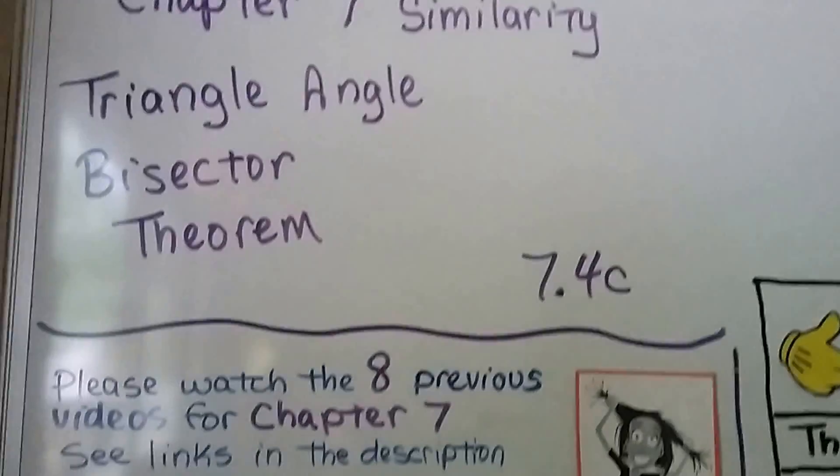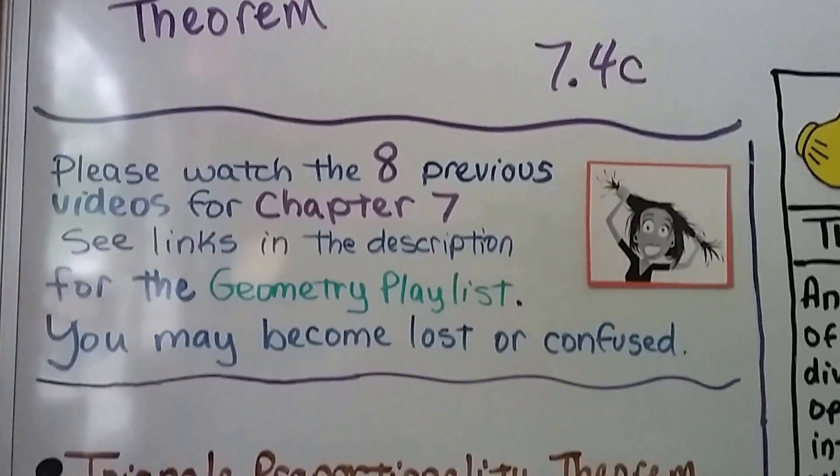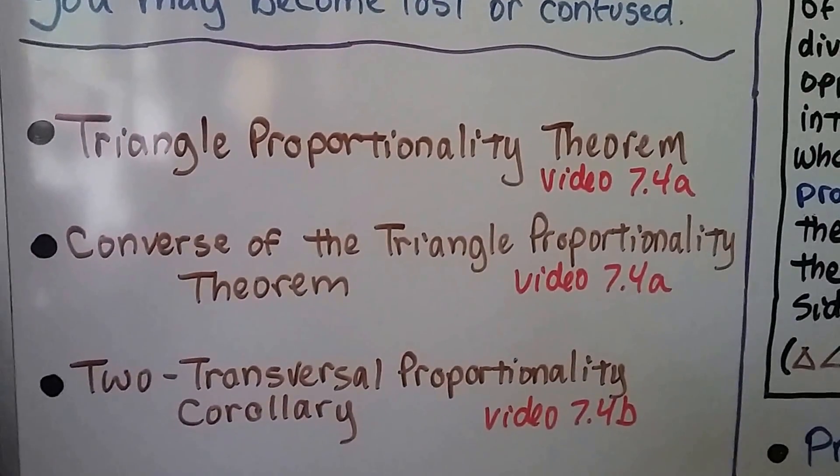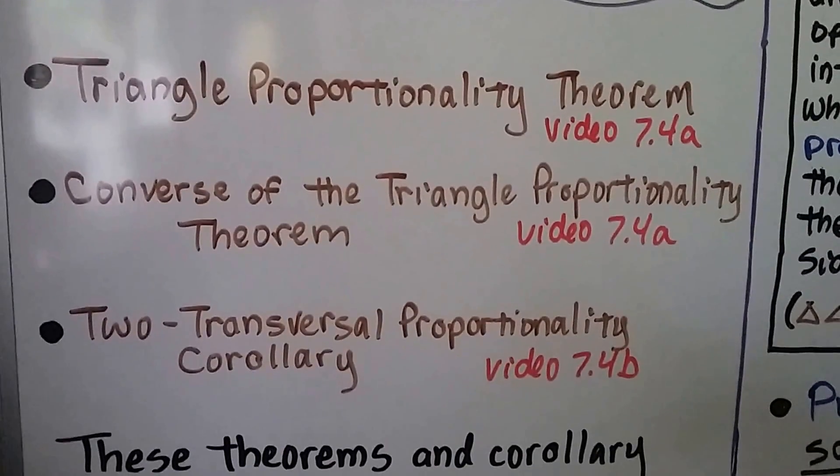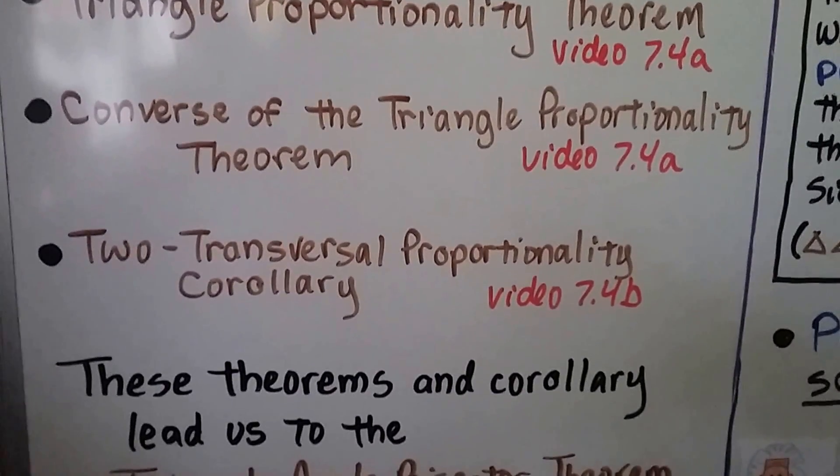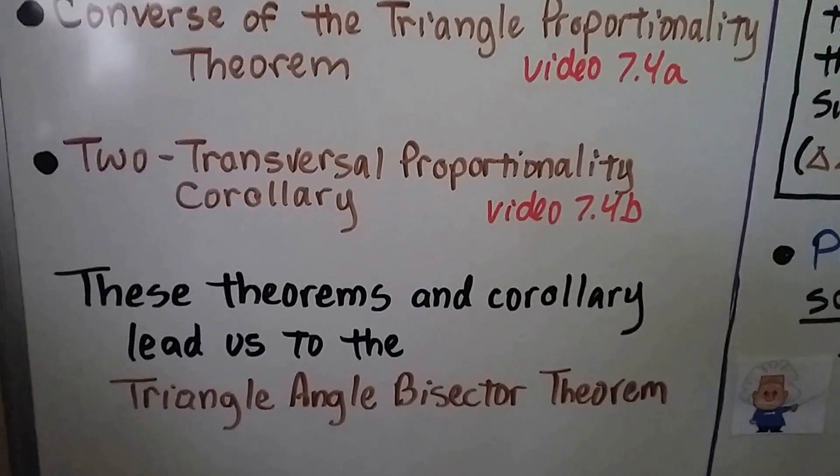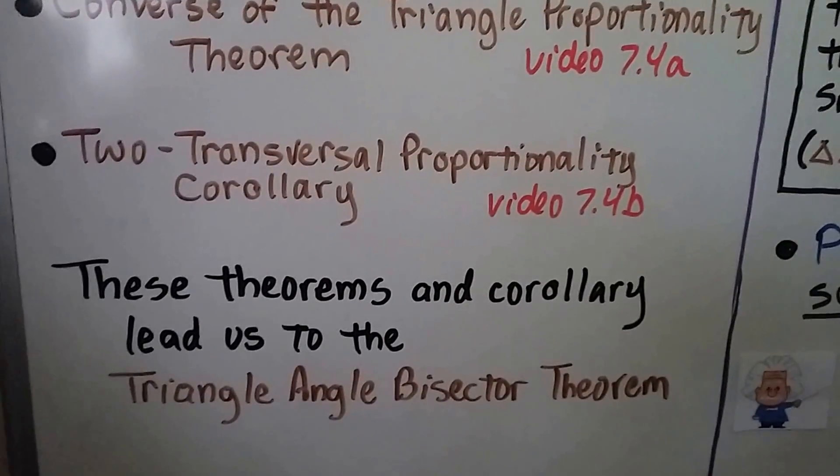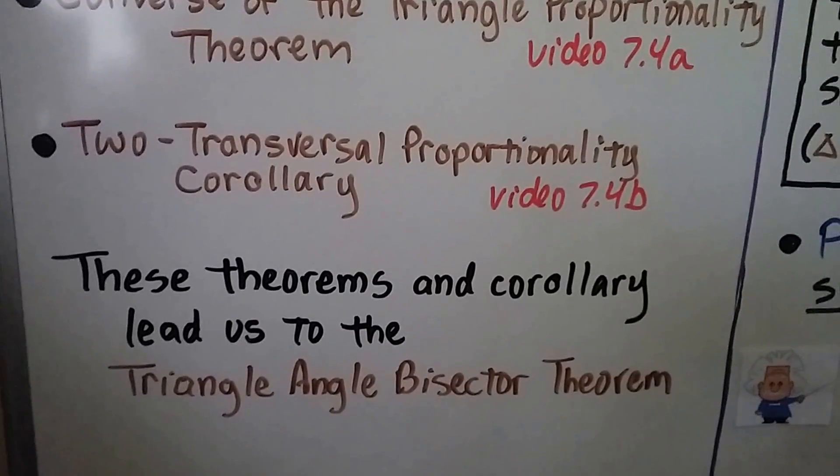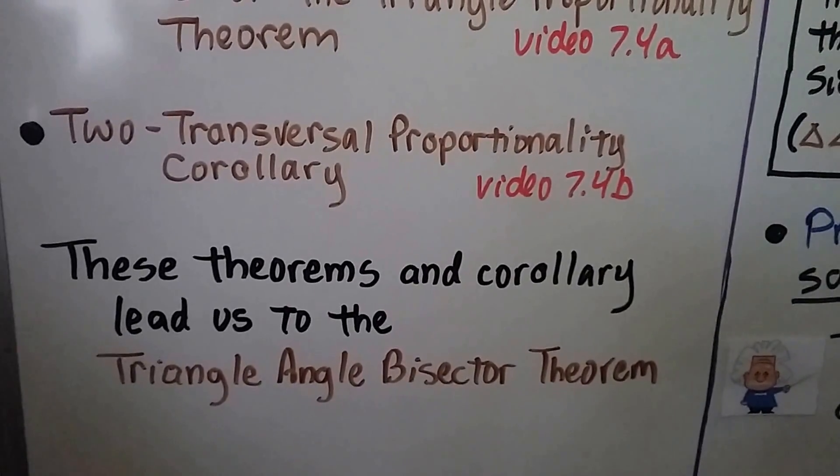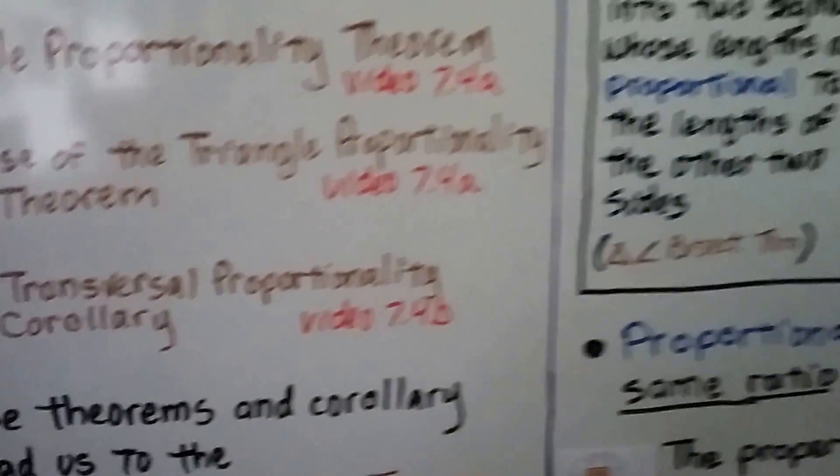I hope you saw the first two, and we have eight previous videos just for chapter seven. Triangle proportionality theorem, we talked about that in the first part of the lesson, along with the converse of the triangle proportionality theorem. We talked about two transversal proportionality corollary in 7.4b, the second part. These theorems and corollary lead us to the triangle angle bisector theorem. That's why it's important to watch the two previous videos.